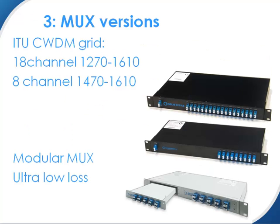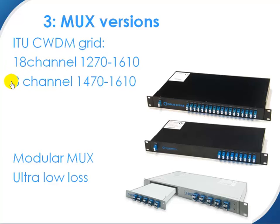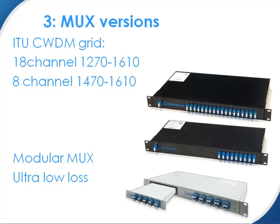There are different mux types. There's an ITU standard, which is from 1270 to 1610 with 20 nanometer steps. So the biggest CWDM mux is 18 channels. A popular version is also the 8 channel, which is from 1470 to 1610. Furthermore, we've got modular muxes and ultra-low loss muxes, which are perfect if you've got a dark fiber which is around 70 kilometers and you need ultra-low loss.